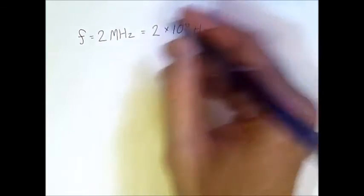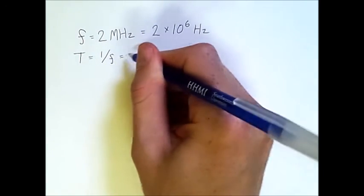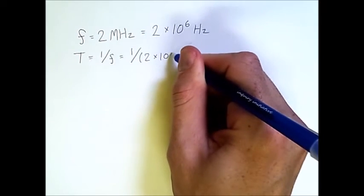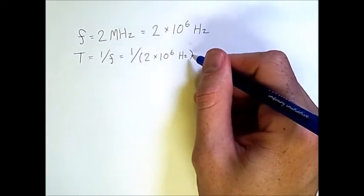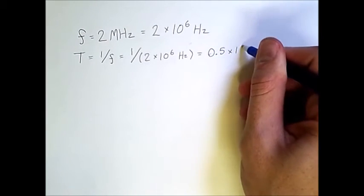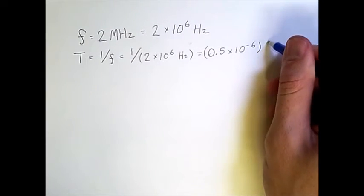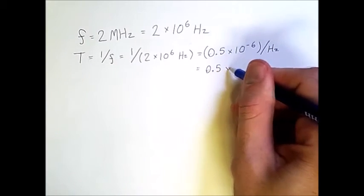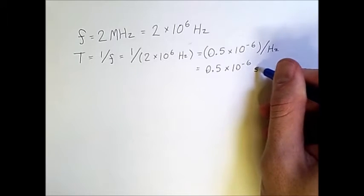If we want to find the period, we'll have to use this formula. Period equals 1 over f. So this equals 1 over 2 times 10 to the 6 hertz, which is equal to 0.5 times 10 to the negative 6 all over hertz, which means that it's 0.5 times 10 to the negative 6 seconds, because hertz is simply 1 over a second.